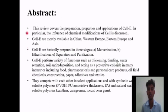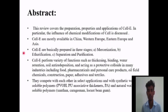Abstract: This review covers the preparation, properties and applications of cellulose ether. The influence of chemical modification of cellulose is also discussed. Cellulose ethers are widely available in China, Eastern Europe and Asia. Cellulose ethers are generally prepared by three stages: first is mercerization, then etherification, and finally separation and purification.